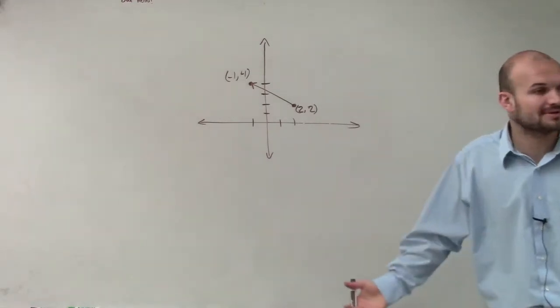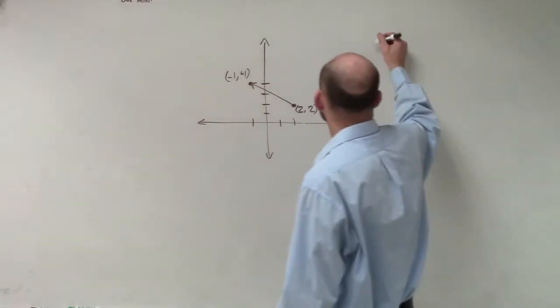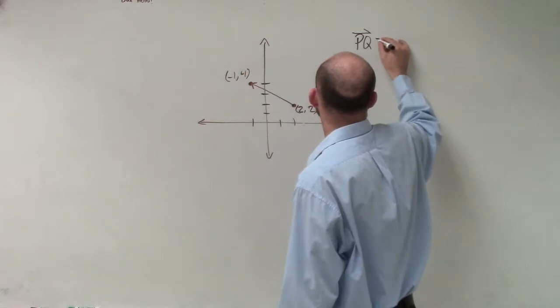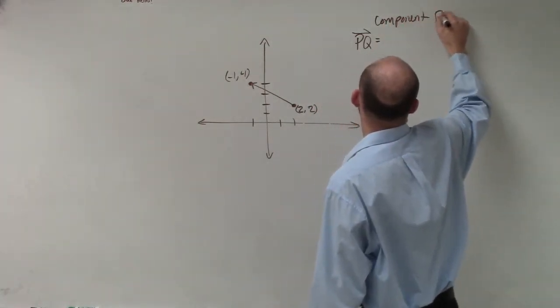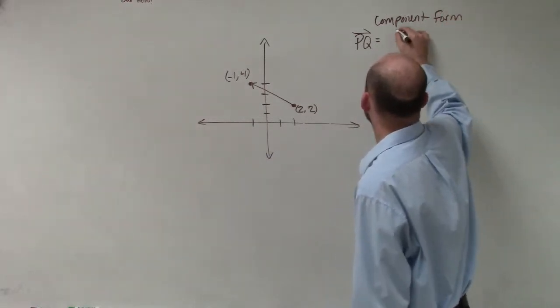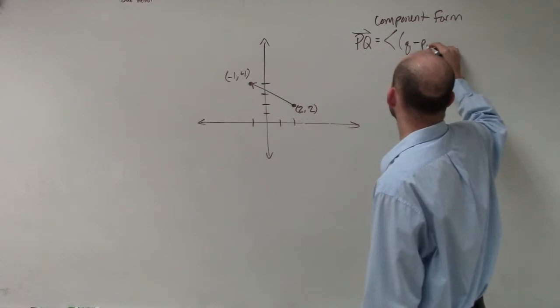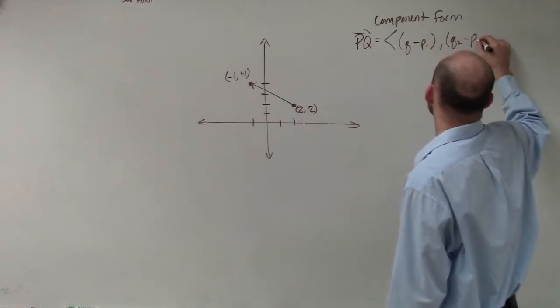So I'll write out the component form one more time, just to make sure you guys remember it, and then we'll go through it. So remember if I had a directed line segment PQ, component form is going to be Q1 minus P1, comma, Q2 minus P2.